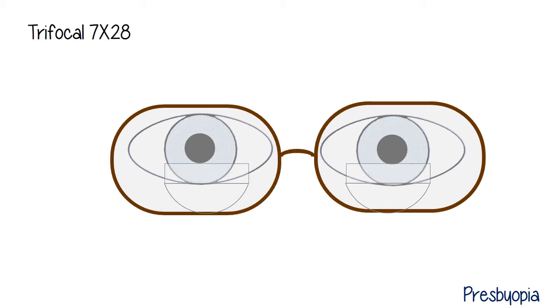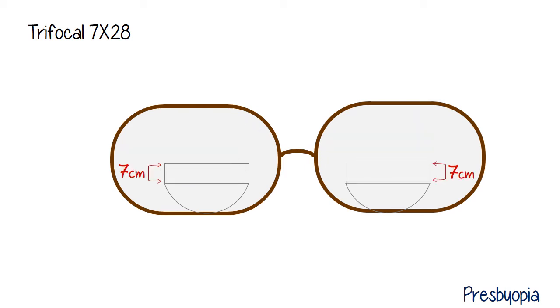Then you have your trifocal. Whereas the bifocal had the two strengths built into the lens, distance and near, the trifocal has an additional segment, that rectangular section there. That's for intermediate work. Maybe the computer length or piano or something. These are commonly 7x28s. The 7 refers to the height of that little trifocal segment.